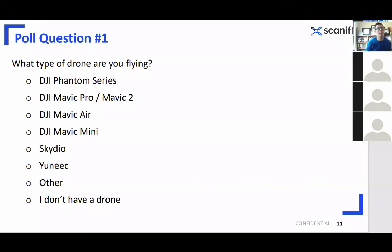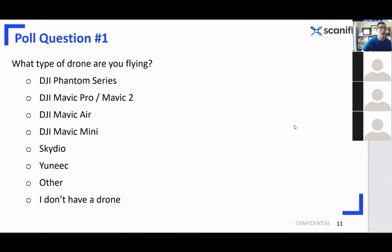It looks like we've got a decent diversity, but about half are split between the Phantom series and the Mavic Pro or Mavic 2. That's pretty consistent with what we're seeing from our customer base and what people are using reliably for site surveying and 3D mapping. Interesting that the Air 2 has been popular. The Autel drone is increasingly interesting, and it's also notable that Skydio only has one respondent, but they have had a lot of promotion recently. Keith will be walking through more hardware information after David.